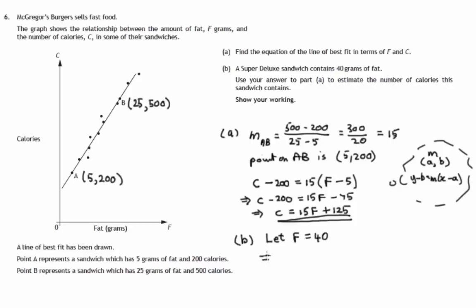Then that means that C is 15 times 40 plus 125. So 4 lots of 15 would be 60, times the other 10 is 600, plus 125. And that gives us 725, and let's check we've answered this. To estimate the number of calories this sandwich contains, estimate is 725 calories.